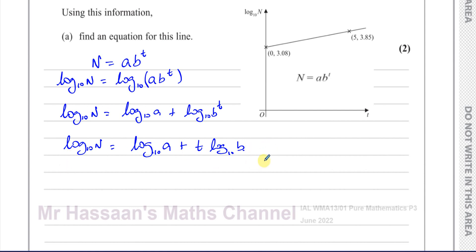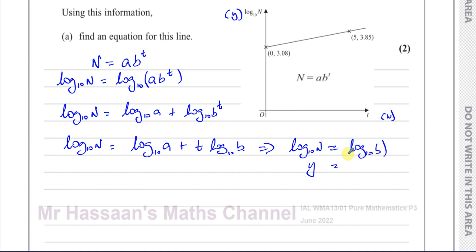This is now in a form we can think of as a straight line graph — y equals mx plus c. Log base 10 of N is like the y-axis and T is like the x-axis. So m, the gradient, is log base 10 of B (the coefficient of T), and c, the y-intercept, is log base 10 of A. We have the information needed from the graph to find m and c.